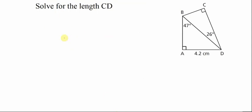As I said in the previous lesson, if you can find the common length between two triangles, that will help you solve the parts you need for the other one. The first task is to find a triangle that has two pieces of information and determine how it relates to what we need.